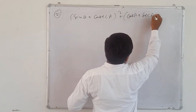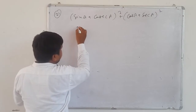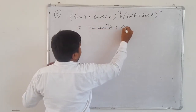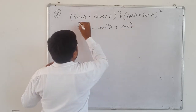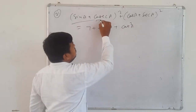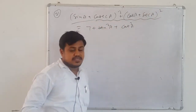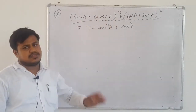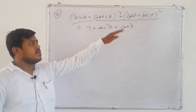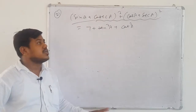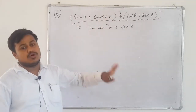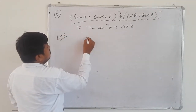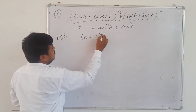Question: (sin a + cosec a)² + (cos a + sec a)² — prove it equals 7 + tan²a + cot²a. Observe the left hand side. We can change to sin/cos, but there is a whole power 2. That means somewhere you will have to open the bracket — you must expand the whole square. So we start from there.